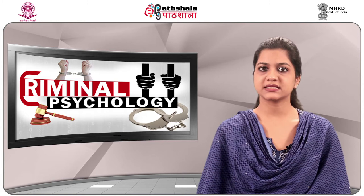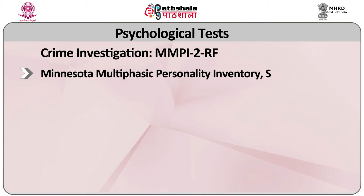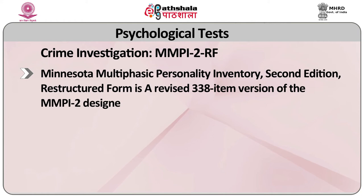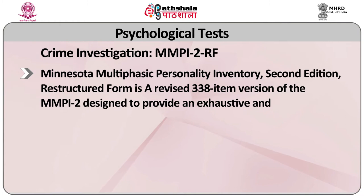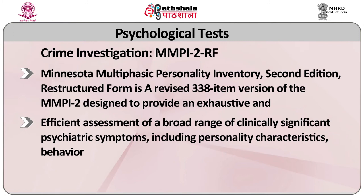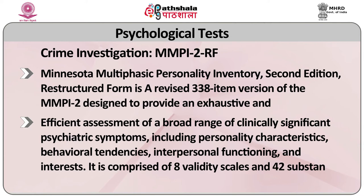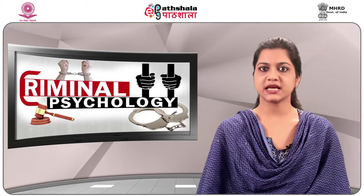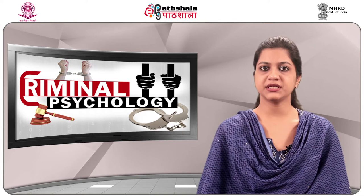MMPI-2-RF (Minnesota Multiphasic Personality Inventory, Second Edition Restructured Form) is a revised 338-item version of the MMPI-2 designed to provide an exhaustive and efficient assessment of a broad range of clinically significant psychiatric symptoms including personality characteristics, behavioural tendencies, interpersonal functioning, and interests. It is comprised of 8 validity scales and 42 substantive scales. The test is appropriate for individuals 18 years and older who have a reading level between the 4th and 5th grade.